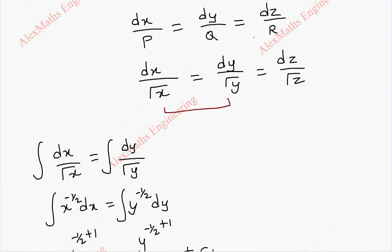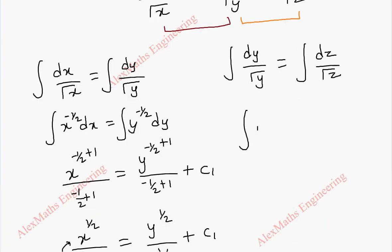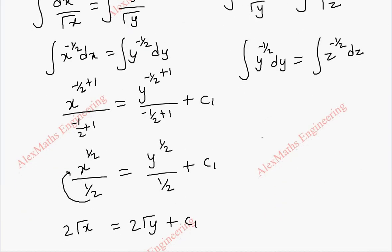Now, we take the other two terms. This second and third. We get the same similar result. So this is dy by root y, dz by root z. This is y power minus half dy. And this is z power minus half dz. After doing integration, we get y power half by half, which is equal to z power half by half plus c2.